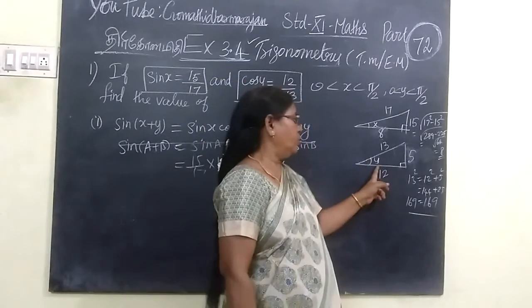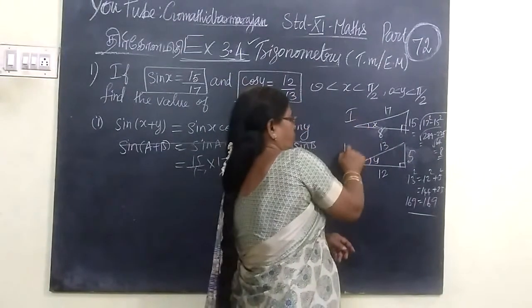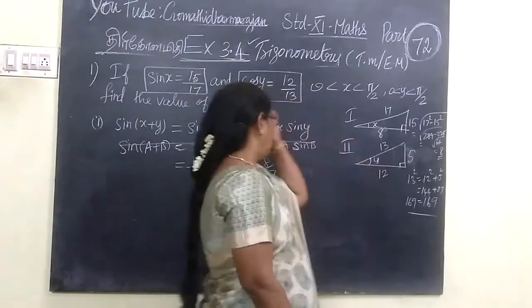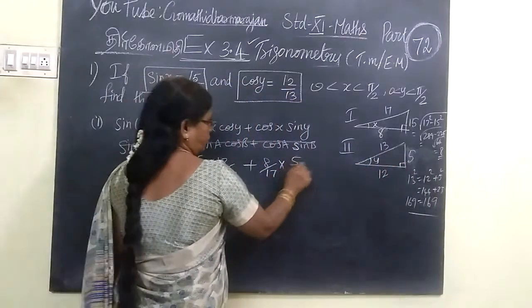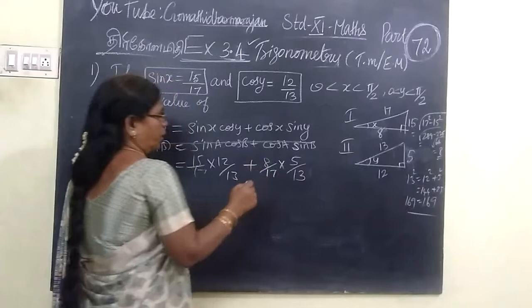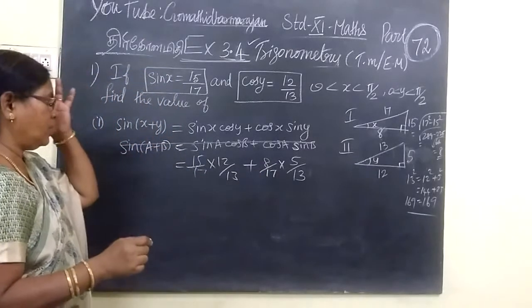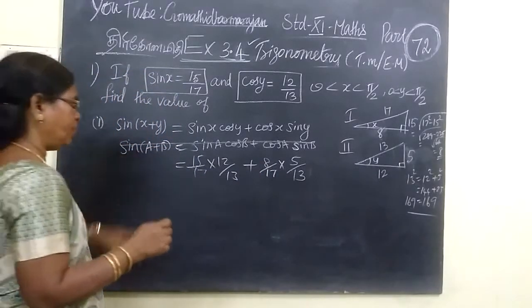So sin x is 15 by 17, then cos y is 12 by 13, plus cos x which is adjacent by hypotenuse, so 8 by 17, into sin y.